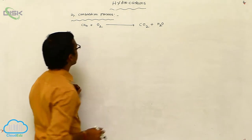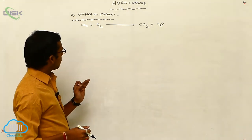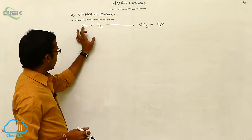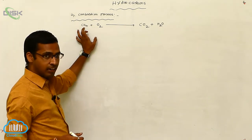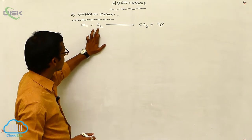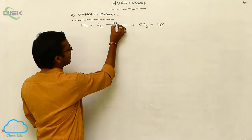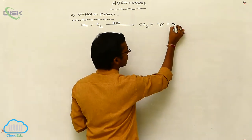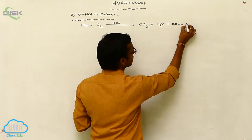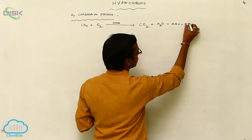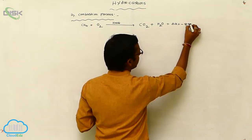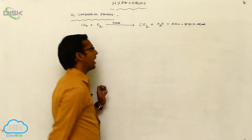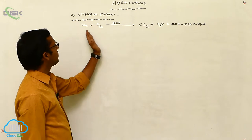Carbon dioxide and water are the products. So the hydrocarbons, when heated with a sufficient amount of oxygen under thermal conditions, produce carbon dioxide and water, and release a large amount of heat. That is, ΔH = −890 kilocalories per mole. This amount of energy is released during the combustion process.